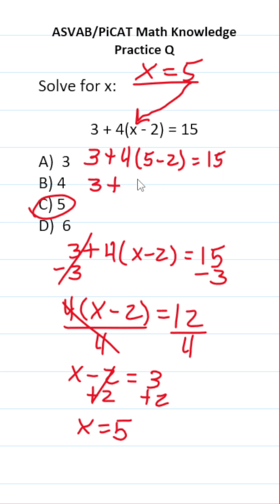This says 3 plus. Again, we're going to work out what's in parentheses first. 5 minus 2 is 3 equals 15. This is 3 plus. 4 times 3 is 12 equals 15. 3 plus 12 is 15.